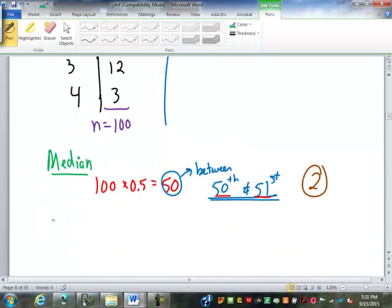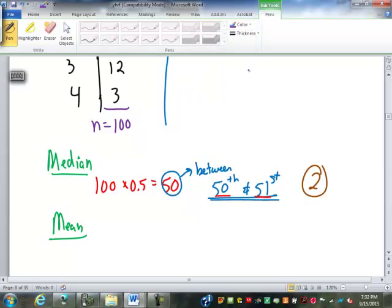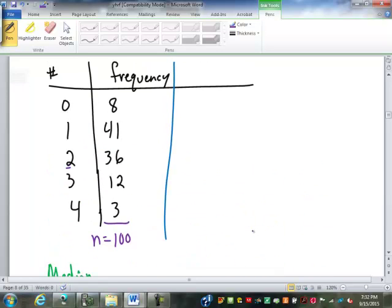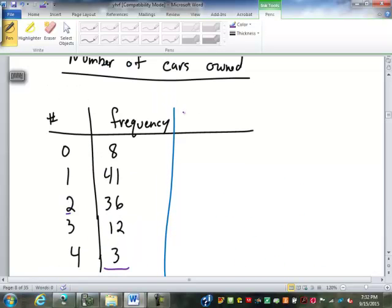Okay, so now to find the mean, our first step is for each value, we're going to multiply the number times the frequency. Let me explain why as we're doing it. What this table is telling me is that we have 8 zeros. Well, if I add up 8 zeros, what do I get? Zero, right? So 0 times 8 is 0.